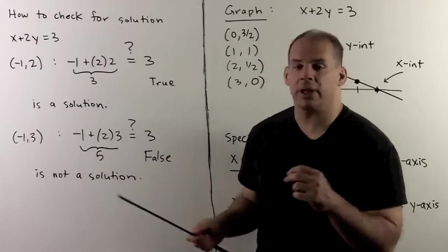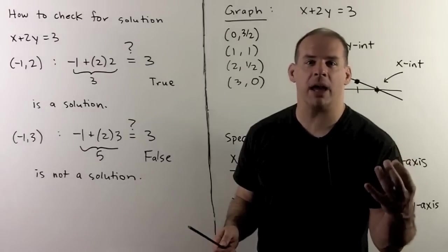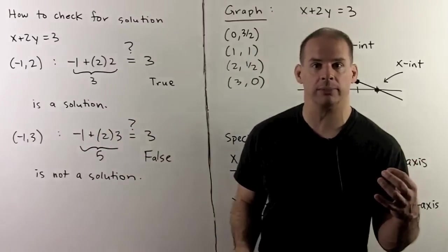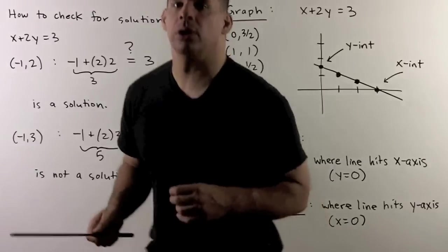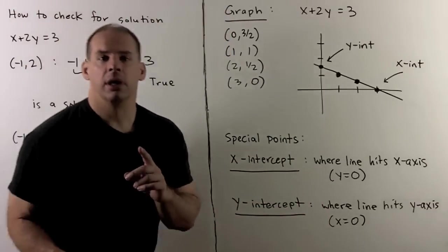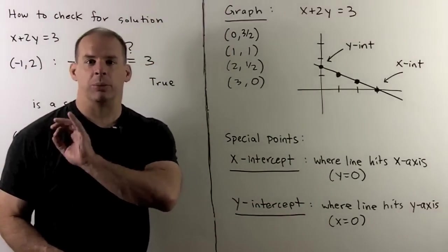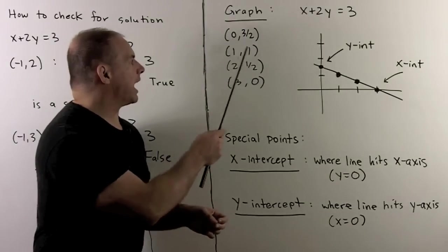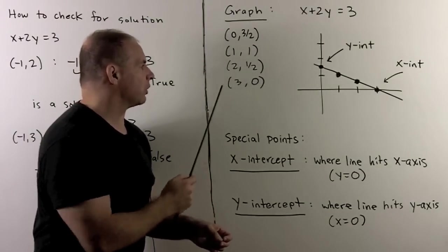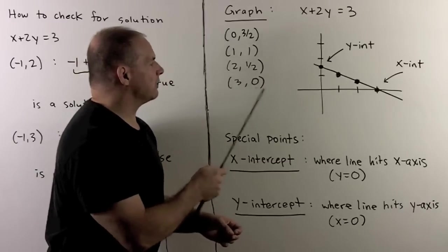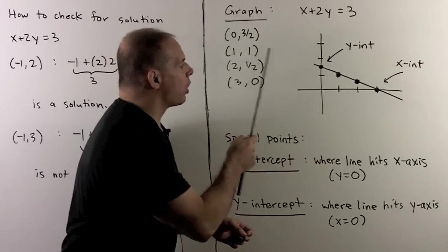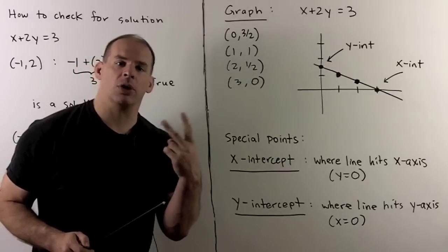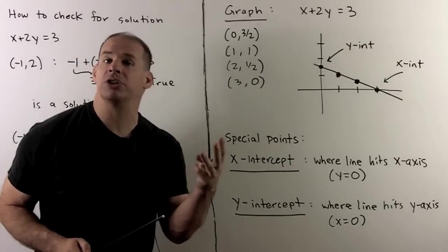This checking process is useful for troubleshooting when graphs don't look right. Taking the points (0, 3/2), (1, 1), (2, 1/2), and (3, 0) and plotting them, we see they all fall on a line. When plotting, you want at least three points to check your work.